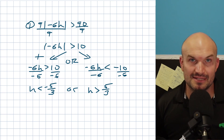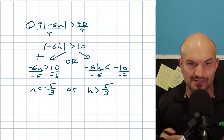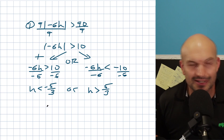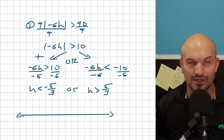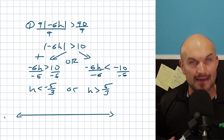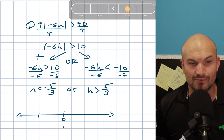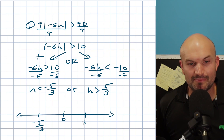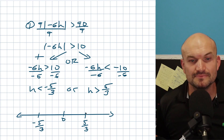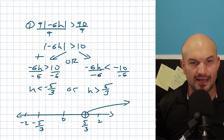If you don't know how to graph five thirds, that's going to be somewhere between one and two, because two goes into six two times, so three goes into five somewhere between one and two. When graphing the inequality, I'm not really concerned with being super precise. Here's zero, and let's say here's two. So here's negative five thirds and here would be positive five thirds. H is greater than five thirds means all values to the right, and H is less than negative five thirds means all values to the left.